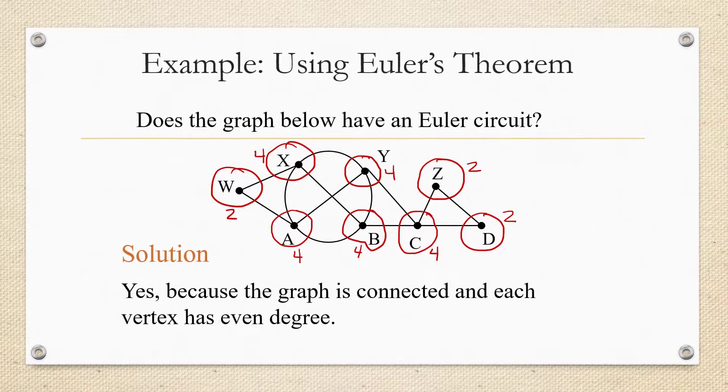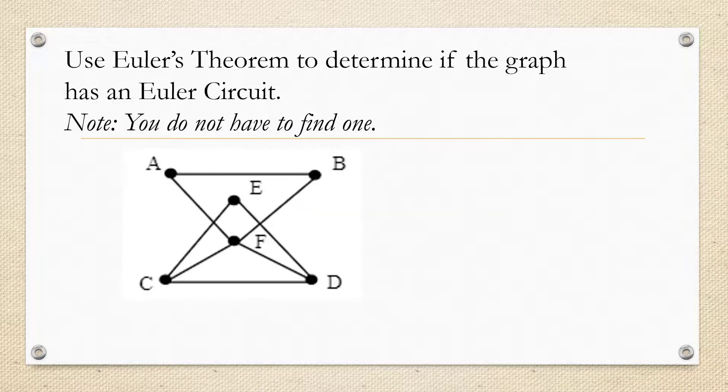Let's look at another example. Use Euler's theorem to determine if the graph has an Euler circuit. You don't actually have to find the Euler circuit, notice. We're going to talk about how to do that using an algorithm called Florey's algorithm later on in another video. But for right now, we're just practicing identifying if one exists. So if you'd like, you can pause the video and figure out if this graph has an Euler circuit.